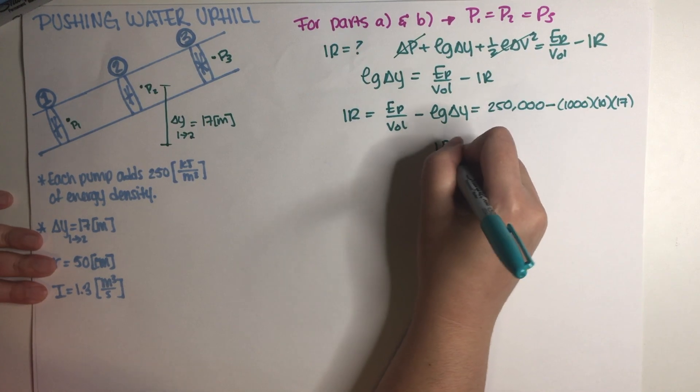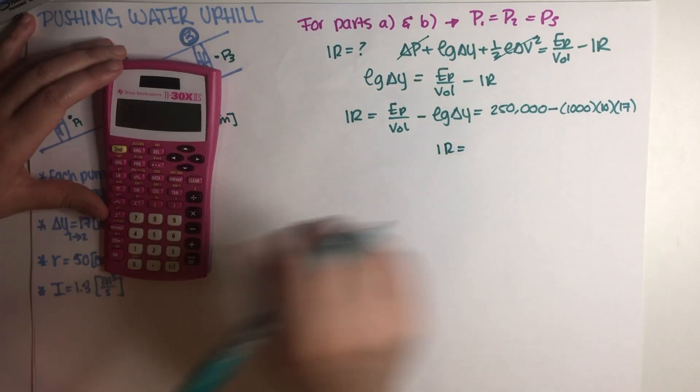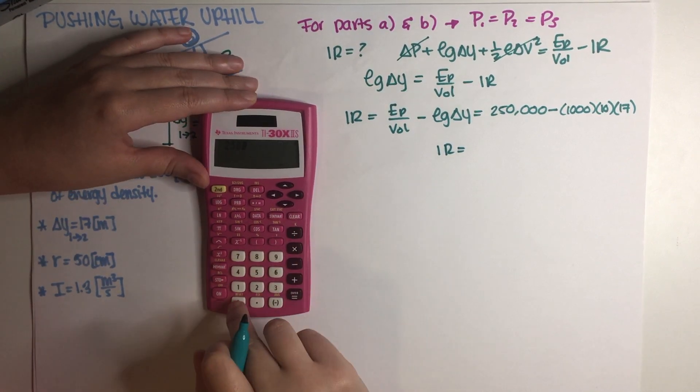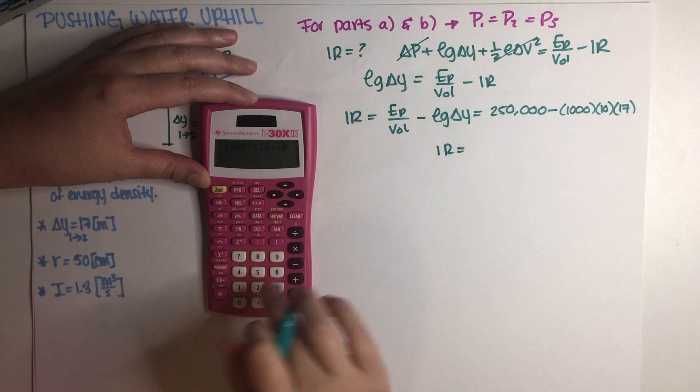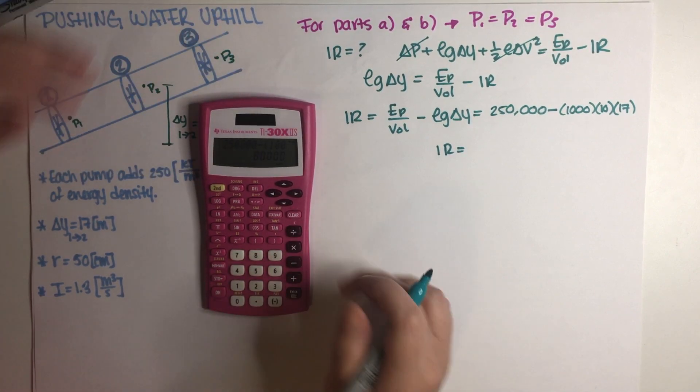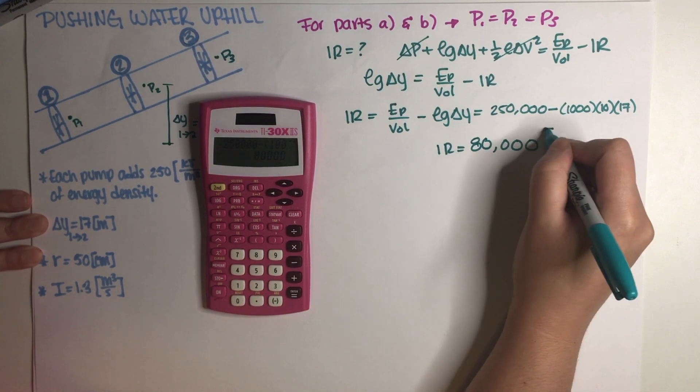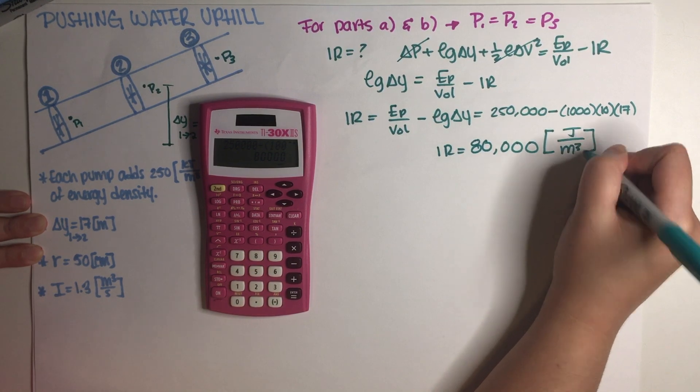So let's just go ahead and put this on a calculator. Two, five, zero, zero, zero, zero, minus one thousand, ten, seventeen. And this is equal to 80,000 joules per meters cubed. There we go.